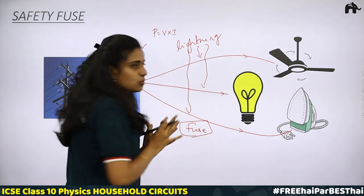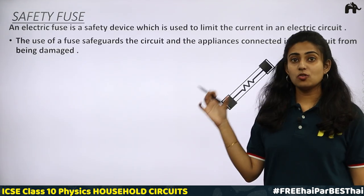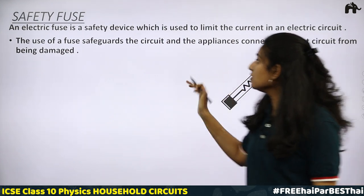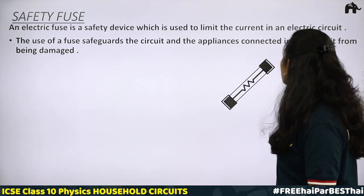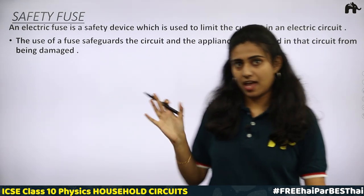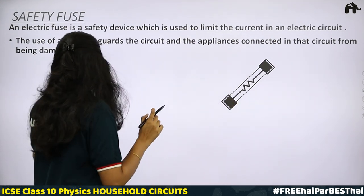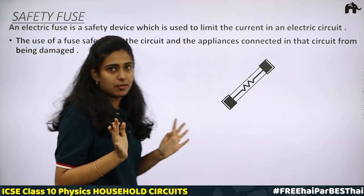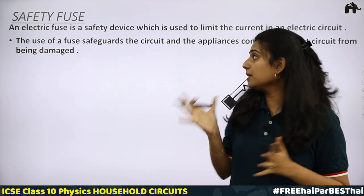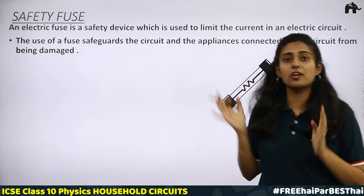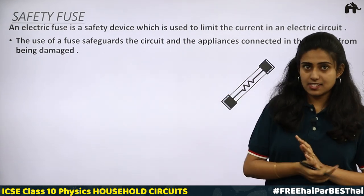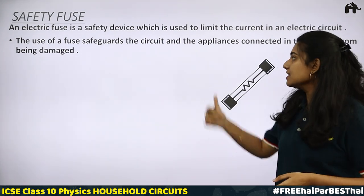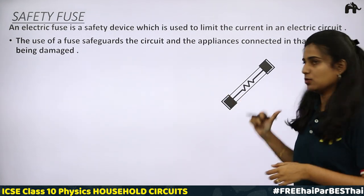In order to prevent more current from reaching the devices, a safety fuse is used. An electric fuse is a safety device which is used to limit the current in an electric circuit. The use of a fuse safeguards the circuit and the appliances connected in that circuit from being damaged. The main purpose of using a safety fuse is to protect the device — if excess current reaches the device, it may get damaged.